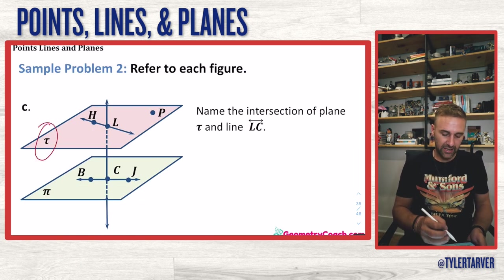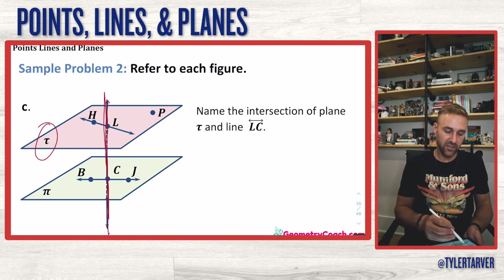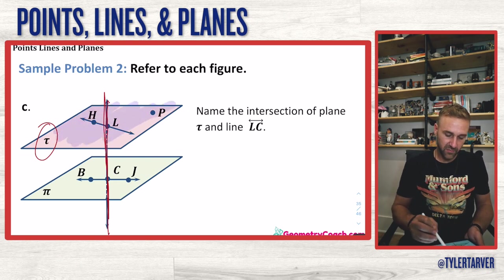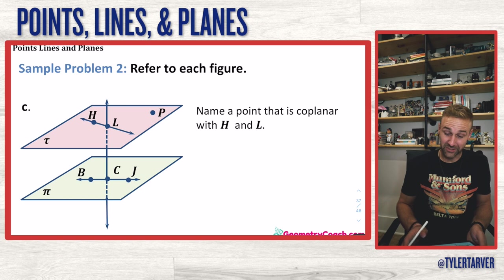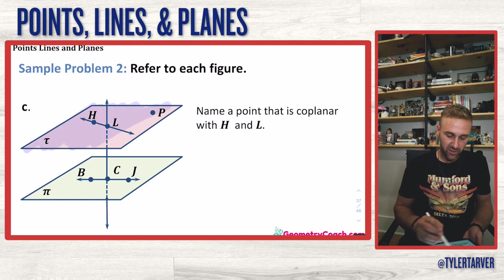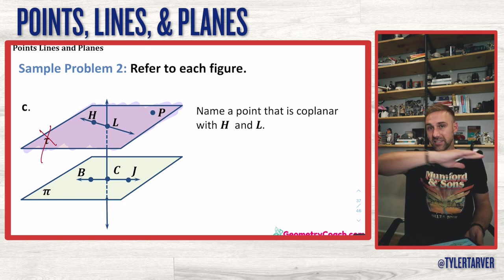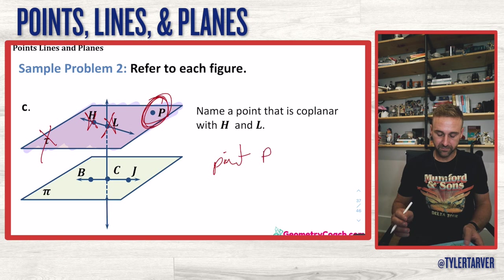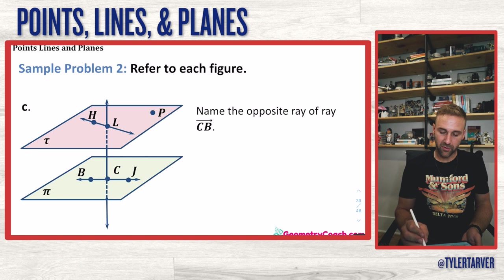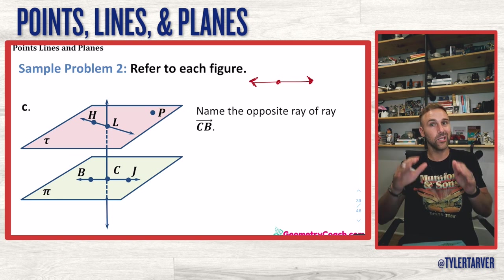Name the intersection of plane T and line LC — where is that pencil going through that piece of paper? Right at point L. Name a point coplanar with H and L — since we already said H and L, the only one left is point P. Remember: two opposite rays look like a line, with one shooting each way.